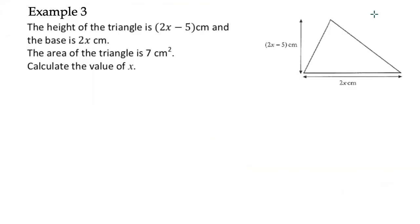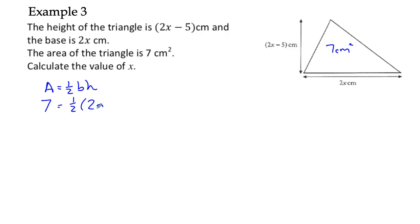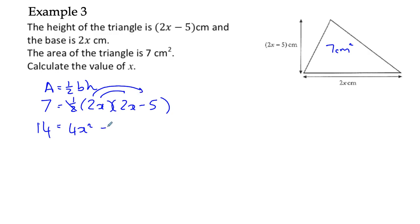Here's a third example — an old exam question. The height of the triangle is given, as is the base. The area is 7 square centimetres; calculate the value of x. The area of a triangle is a half times the base times the height. Substituting in: we know the area is 7, the base is 2x, and the height is 2x minus 5. So 7 equals a half times 2x times 2x minus 5. Multiplying both sides by 2 to get rid of the half gives 14 equals 2x times 2x minus 5, which expands to 4x squared minus 10x.